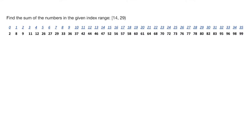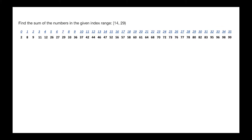The question here is: find the sum of the numbers in the given range from 14 to 29. In general you may be asked to find the sum of the numbers in any given range, and you may be given multiple ranges. So in this example we want to find from index 14 to 29. Index 14 is right here, and we're ending right before 29. We want to add all of these numbers up and see what result we get.